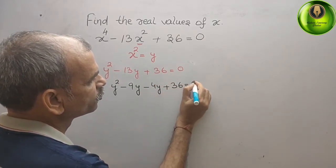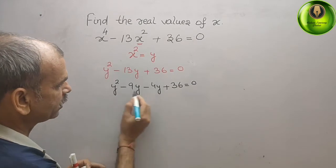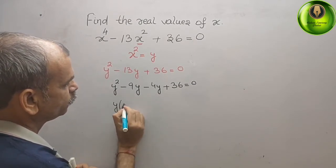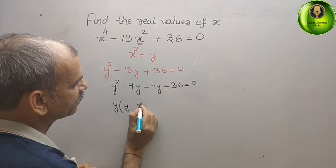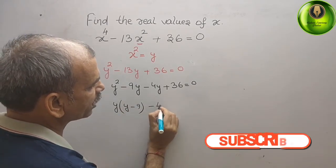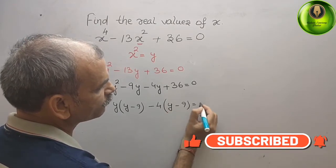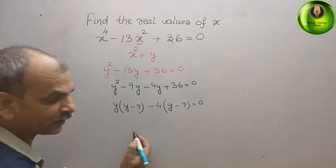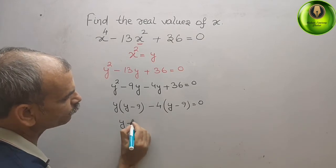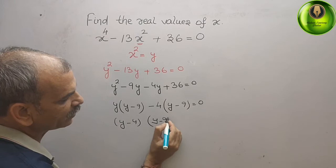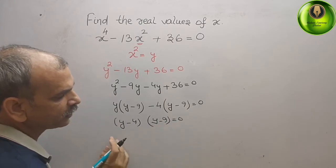that gives you 0. Now here the common is y, you will get y minus 9. Here the common is minus 4, again you will get y minus 9 that gives you 0. Now what are the factors? y minus 4 and y minus 9 that gives you 0.